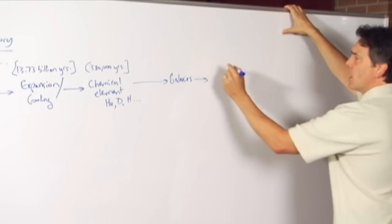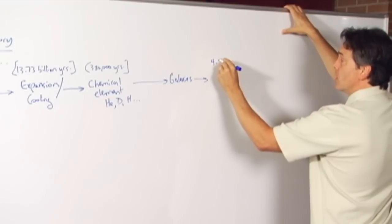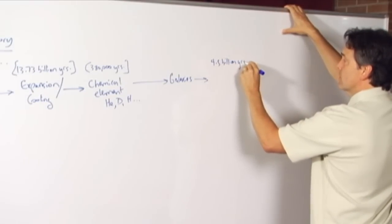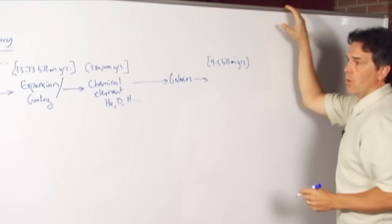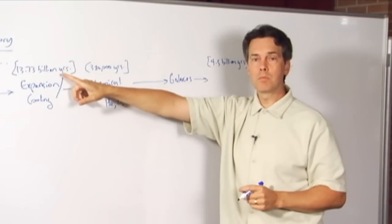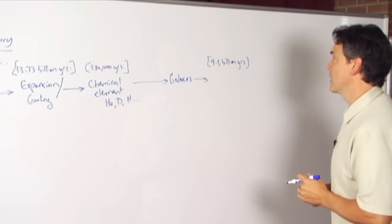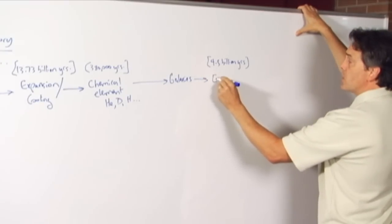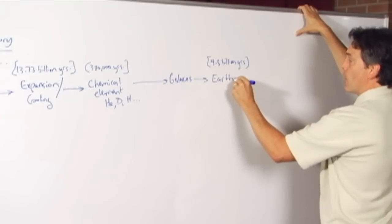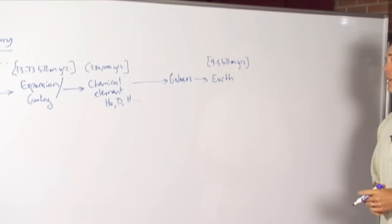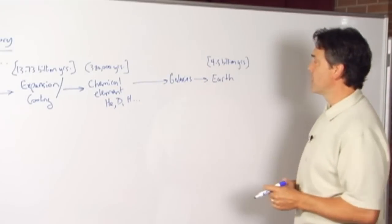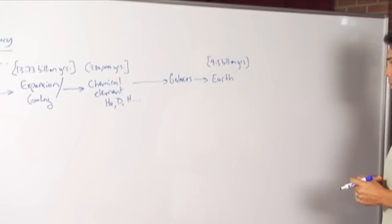Next major event, at least from our perspective, about 4.5 billion years ago, or roughly one-third of the time from the beginning of the Big Bang. We have the formation of our Earth, in our particular solar system, with our particular star, in our particular galaxy, and so forth.